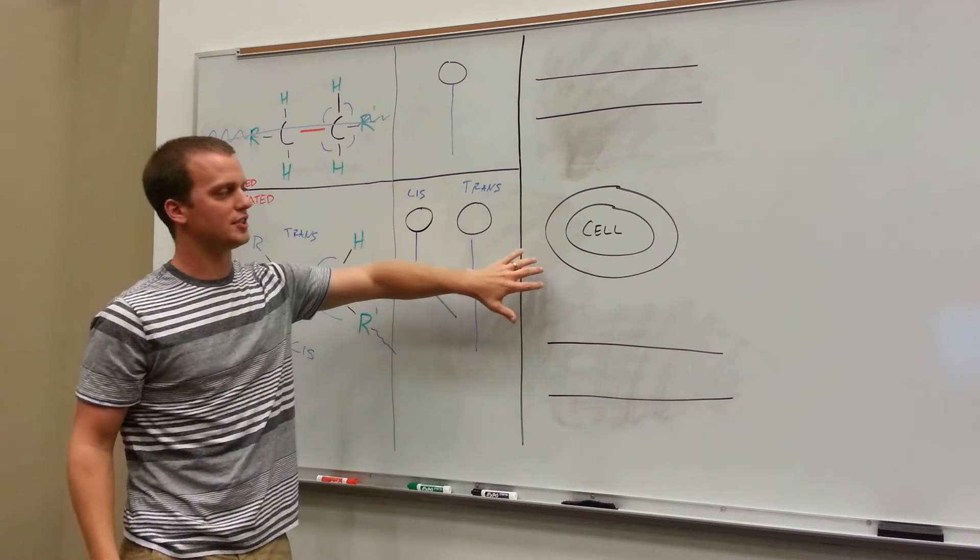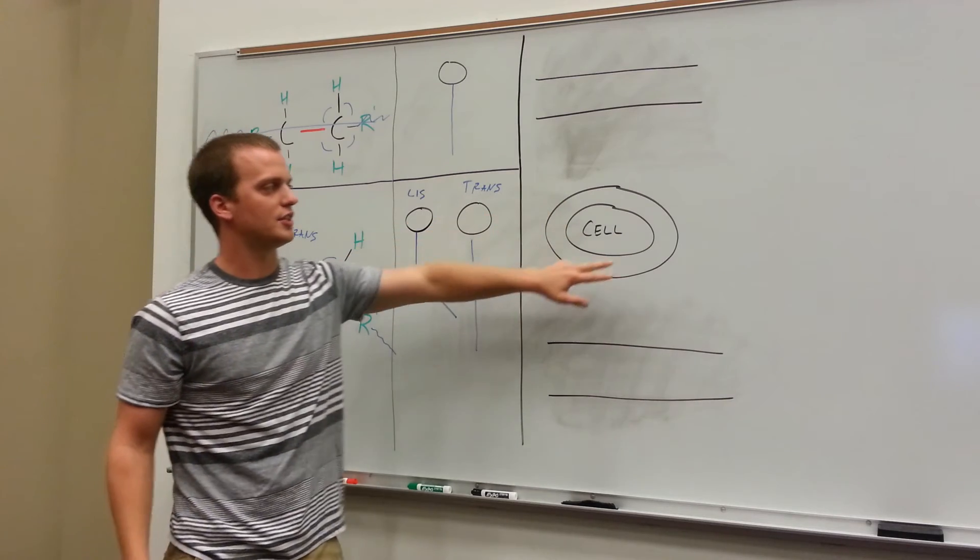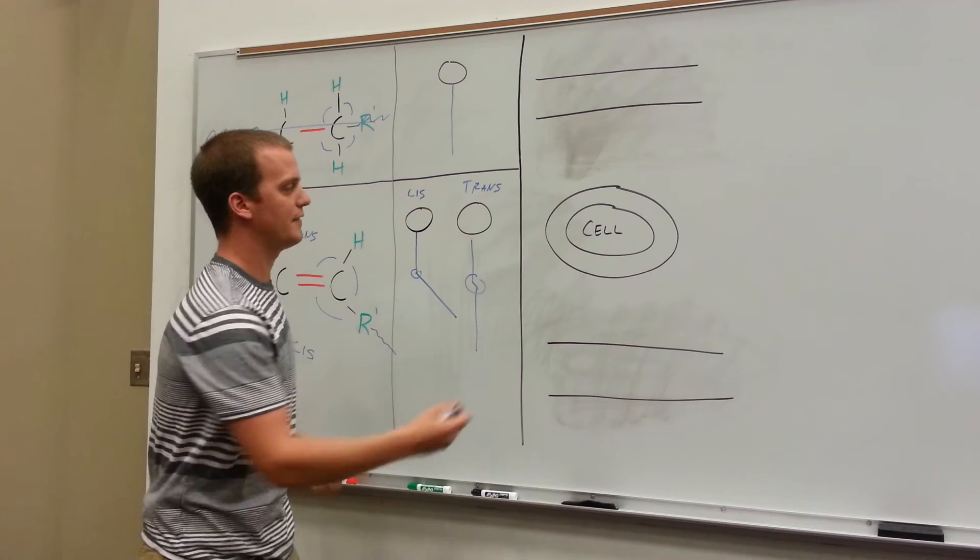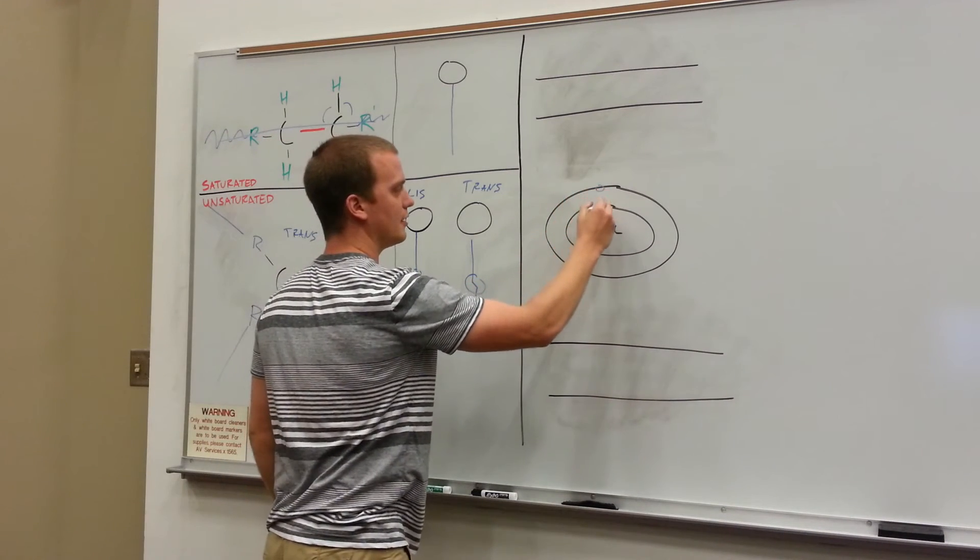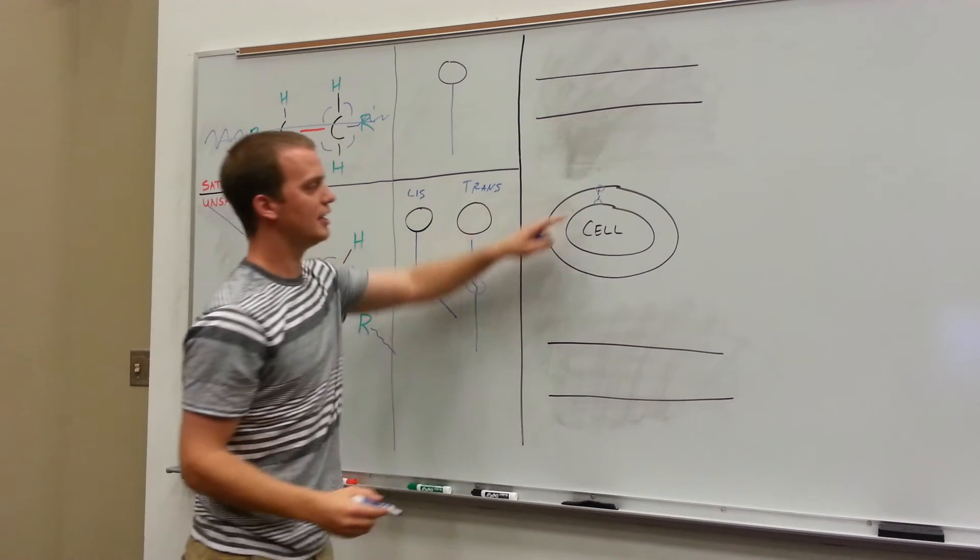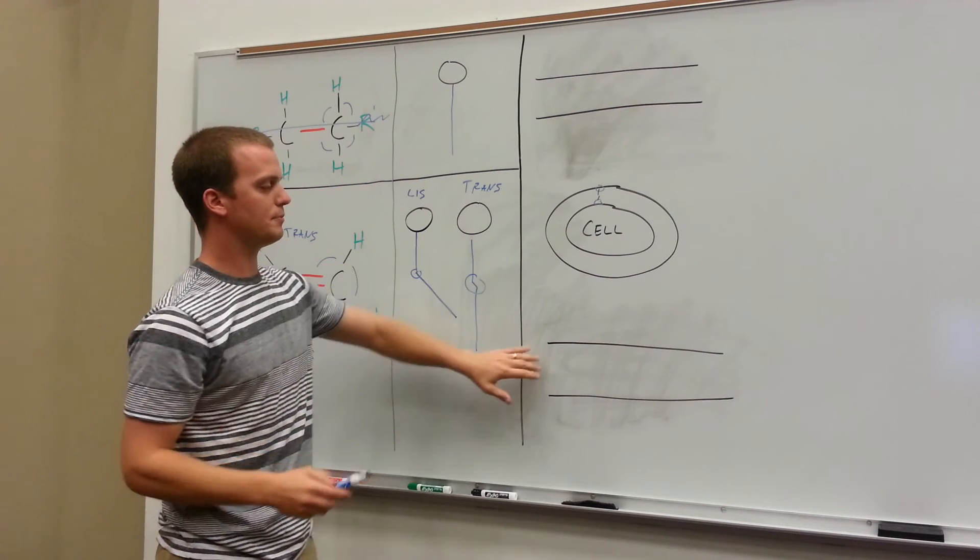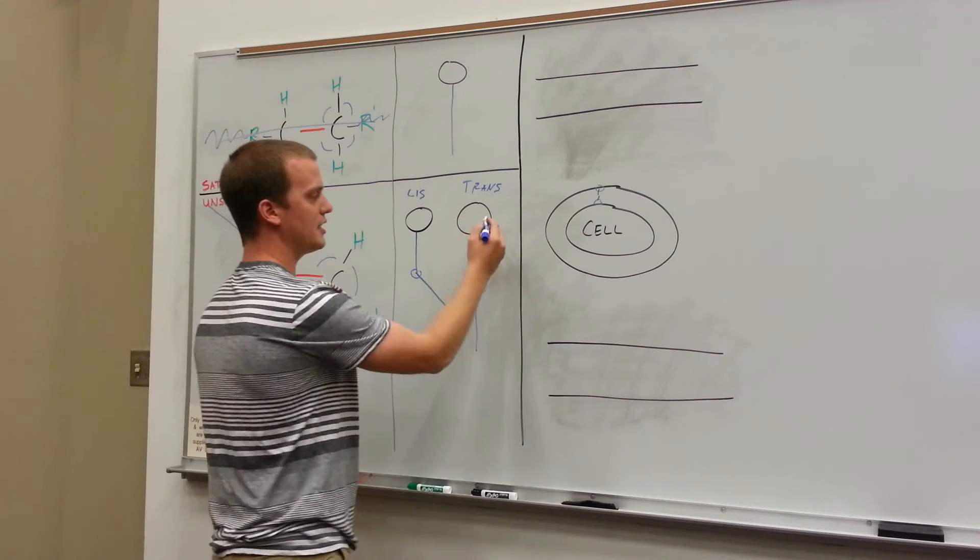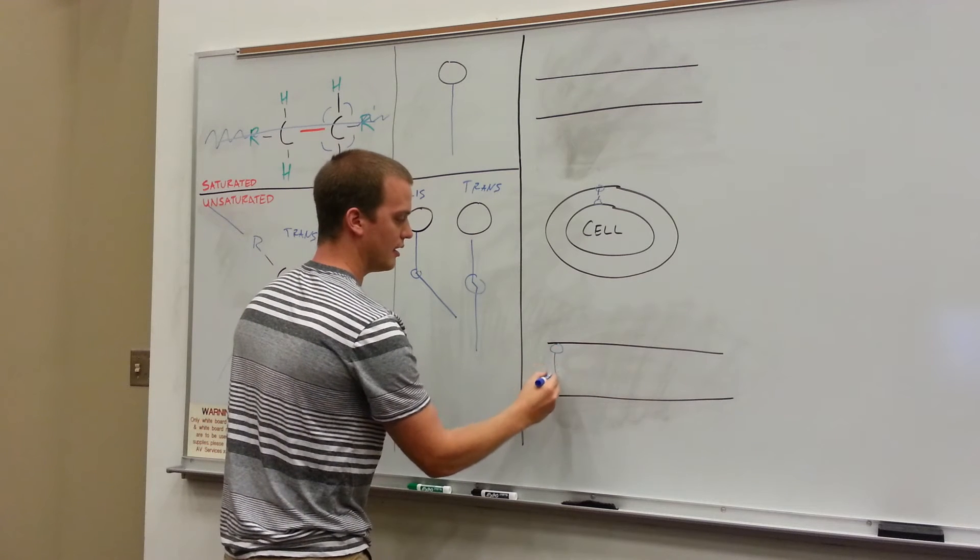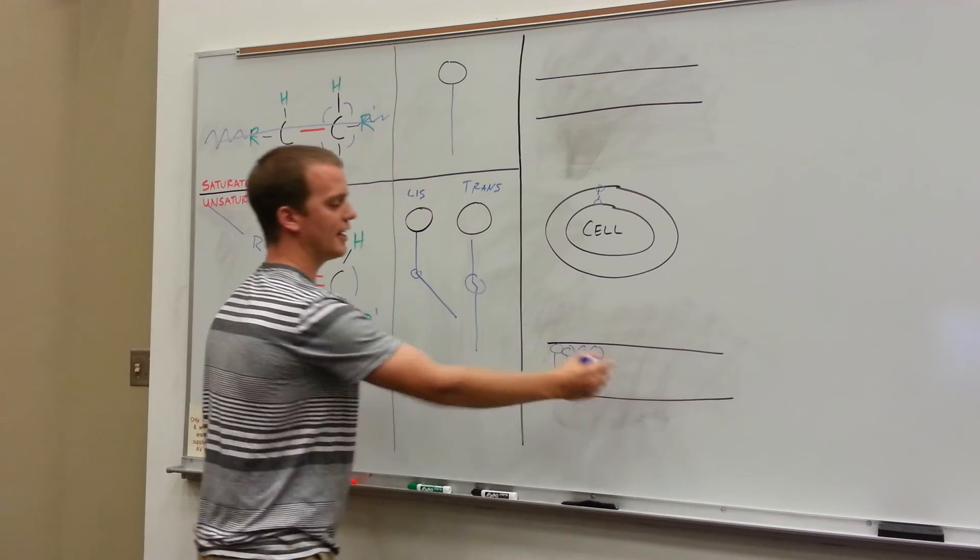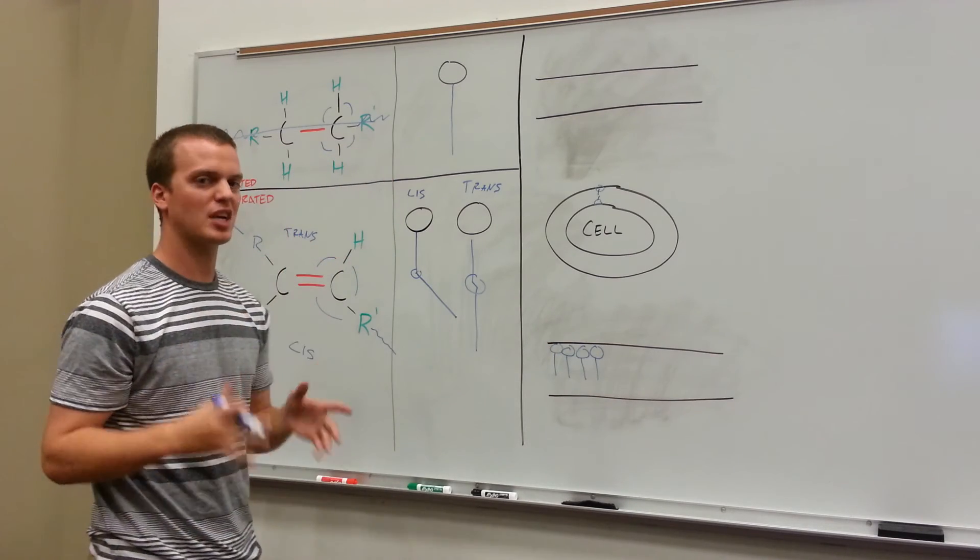Now if we move over here to the cell, as you probably know, a cell has a phospholipid bilayer, meaning it has two layers of fat around it protecting it. You can think of these as just full of these different kinds of fatty acids. Now if we filled up this lipid bilayer with trans fatty acids, it's going to be very linear. We're going to be able to pack tons and tons of fatty acids in there, and it's not going to be very mobile. It's not going to be very healthy.